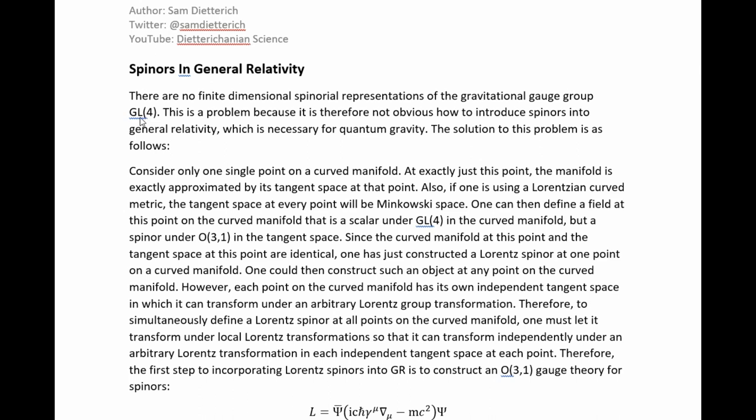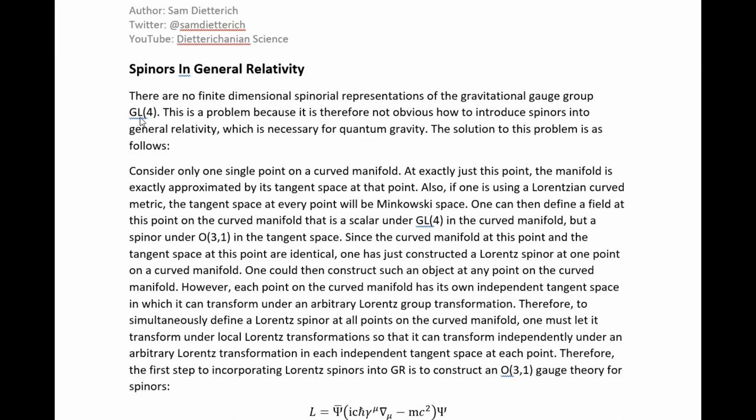Here follows the math section where I explain how to do that. It's somewhat intricate. There are no finite dimensional spinorial representations of the gravitational gauge group GL(4). This is a problem because it is not obvious how to introduce spinors into general relativity, which is necessary for quantum gravity, since it would be difficult to make a phenomenologically sensible quantum gravity theory that does not include spinors coupled to the gravity field.